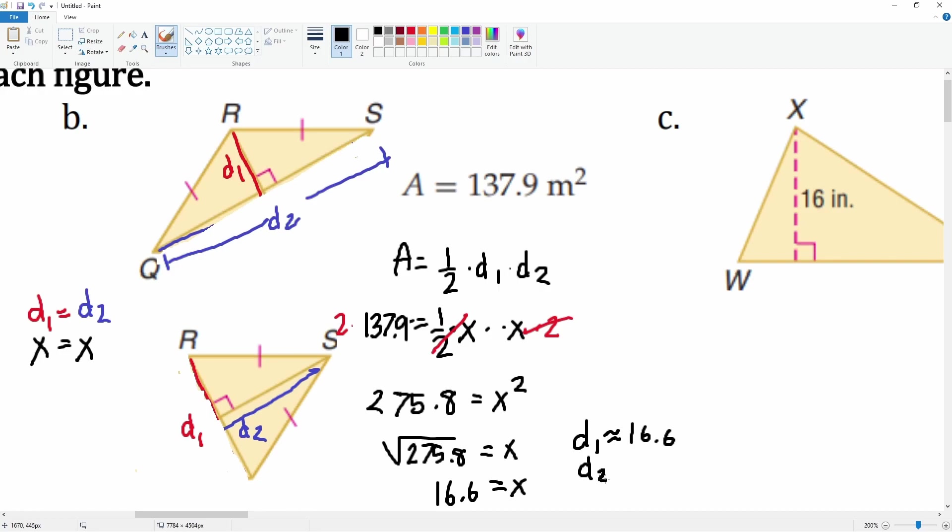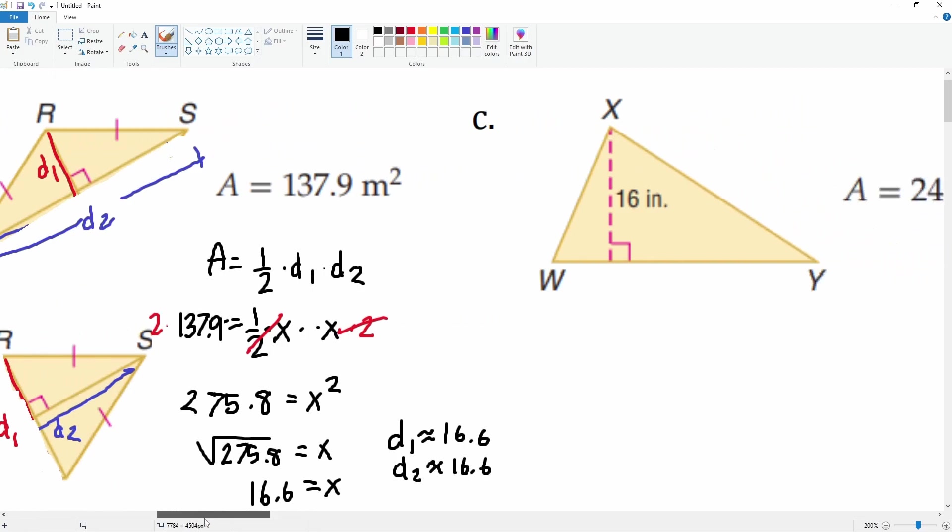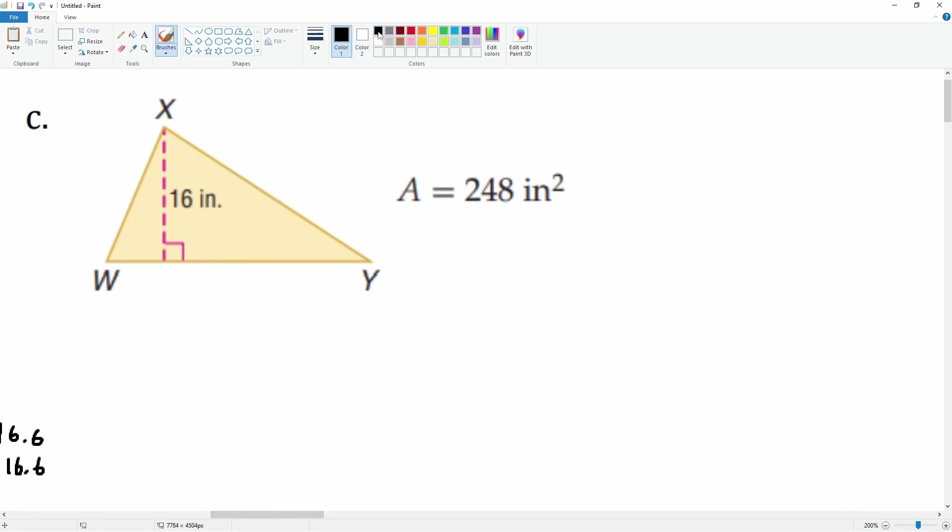Let's do part c. This is a triangle, so the area is 1/2 × base × height. We have the height which is 16 and we have the area which is 248, so we're missing the base.